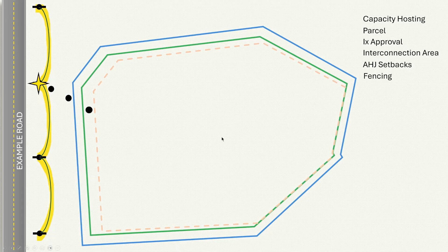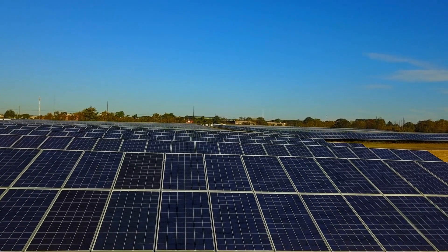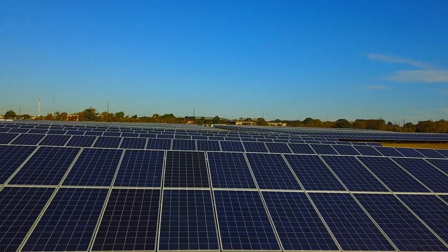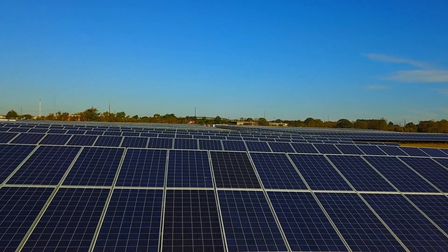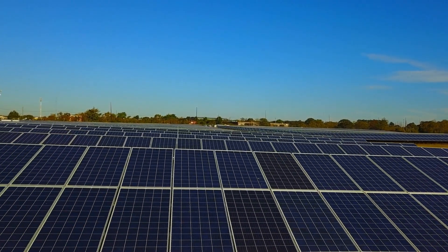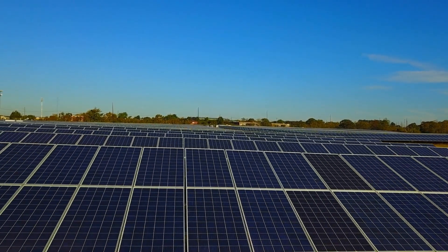Next up we're going to look at our fencing boundaries. As you can see here, sometimes the fencing is the exact same line as the setback. In other places we may need to hold it back a little bit further — for instance, if the utility requires all of their interconnection facilities to be outside of the array fence.